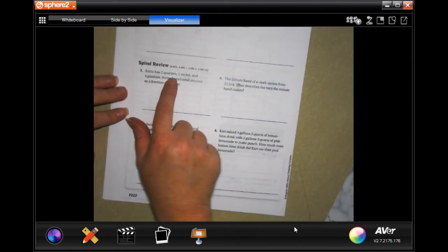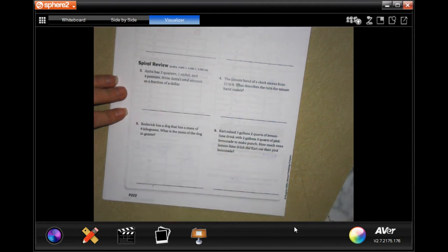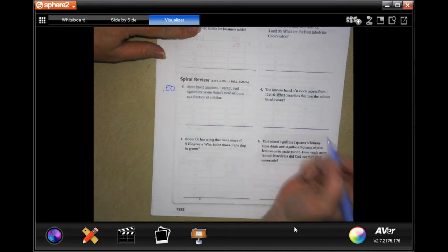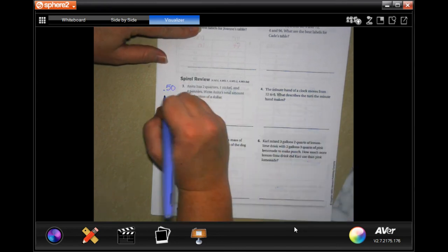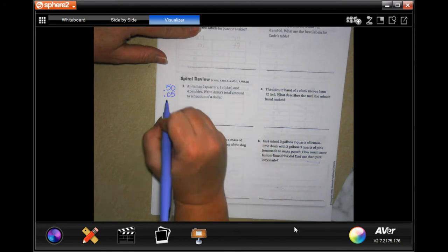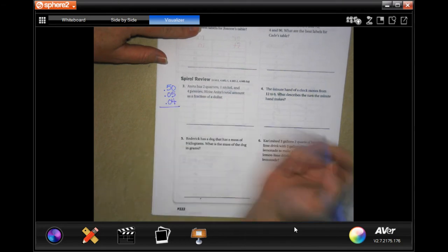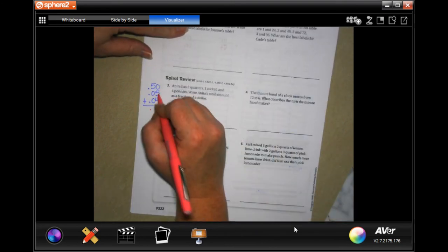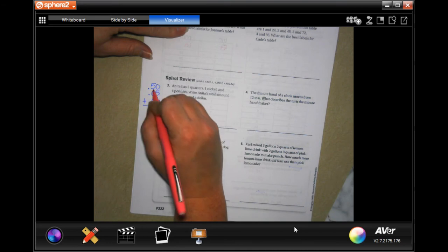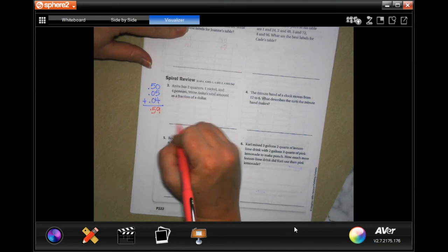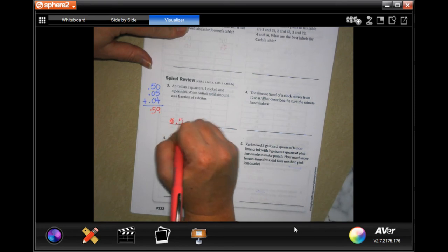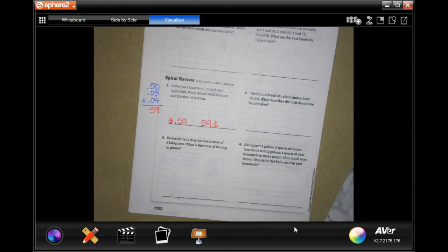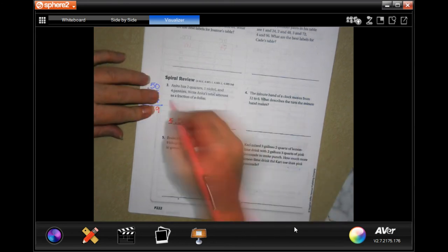Anita has two quarters, a nickel, and four pennies. Anita's total amount: two quarters is 50 cents, a nickel is 5 cents, and four pennies is 4 cents. Add them up. Zero plus five plus four is nine, and five plus zero plus zero is five. It wants a fraction of a dollar, so we're gonna write 59/100.